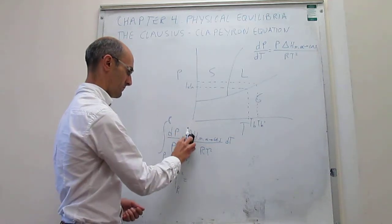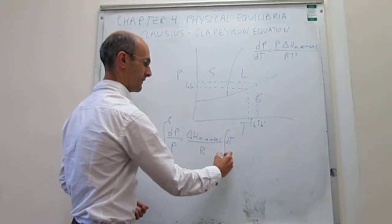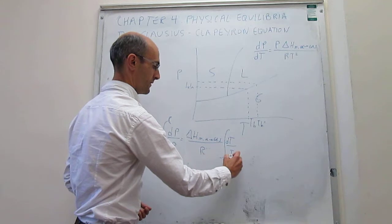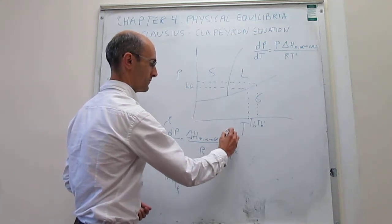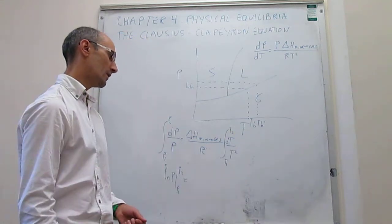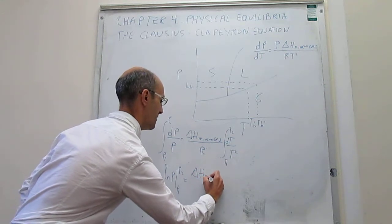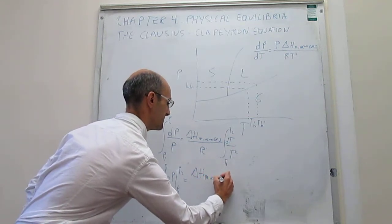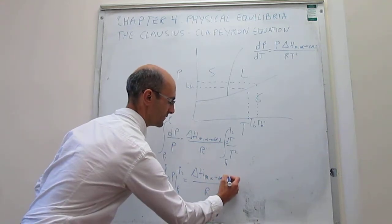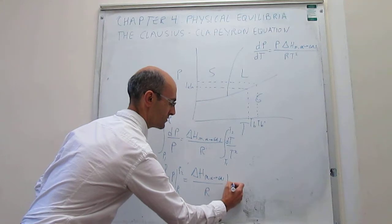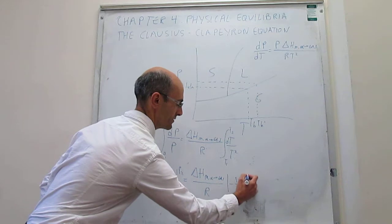Notice that what you need to do is simply this: you can factor those out, and then you have to integrate dT over T squared from T1 to T2. That's going to equal ΔH from alpha to gas over R, and the integral of dT over T squared equals minus 1 over T, evaluated from T1 to T2.